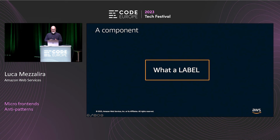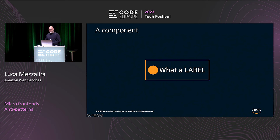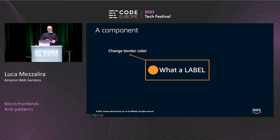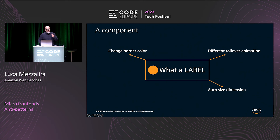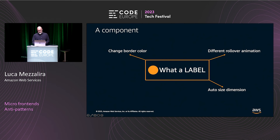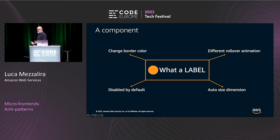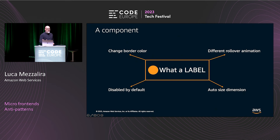The button has a label, so you can set the label — done. Suddenly there's a new requirement: now you also have the possibility to have or not an icon. Then your button starts to have success inside the company, so another portal wants to use it but wants to change the border color. Then they want a different rollover animation, then auto-size dimension because the button is used in multiple portals with multiple languages, and finally they want to disable the button. So you have a bunch of capabilities of your component exposed to someone else — all driven by the container of the component.